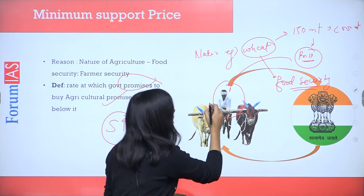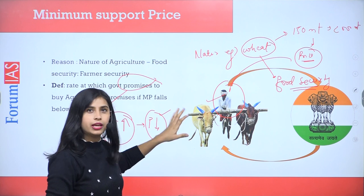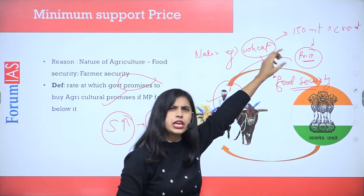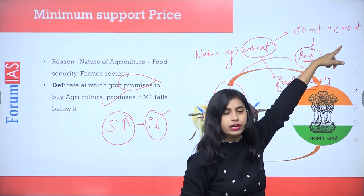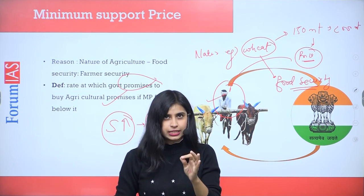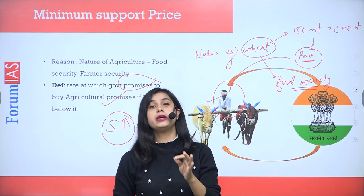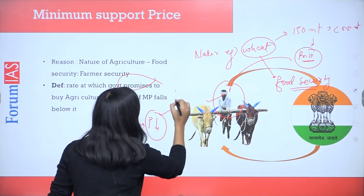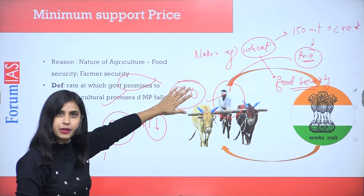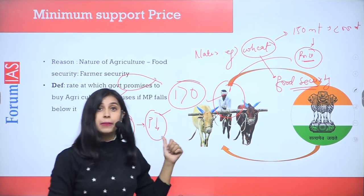In order to provide an incentive to the farmer to produce without being afraid of the price in the market, the government says: even if you produce 200 million tons and the price may fall in the market, don't be afraid — because we will provide a certain minimum price to you that will ensure better remuneration. Your input will never be more than your output. This security given by the government to the farmer is called minimum support price.